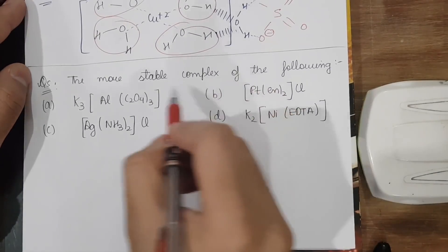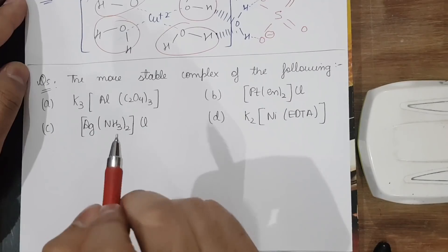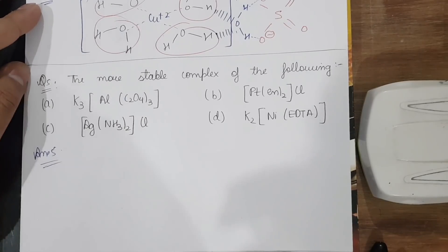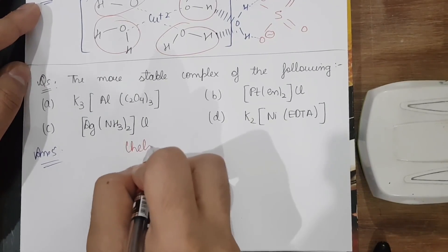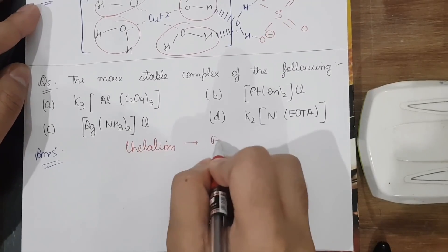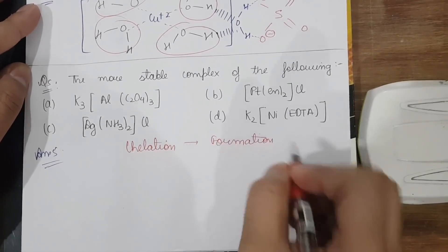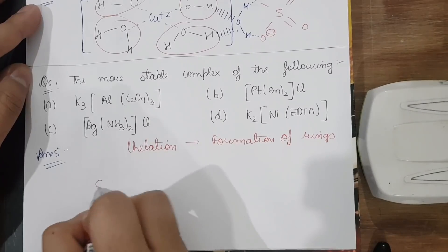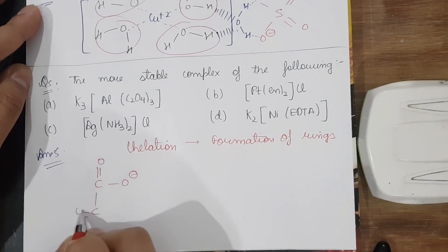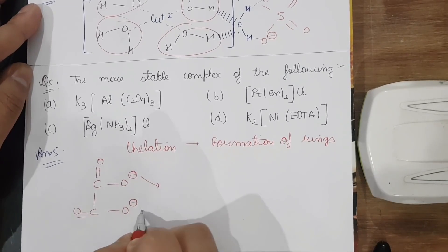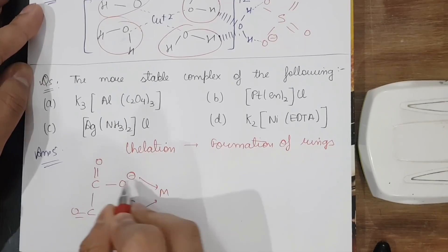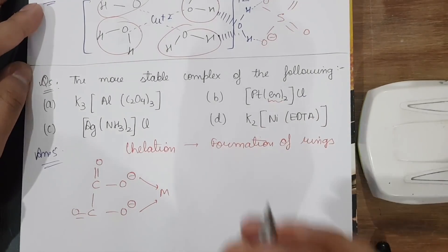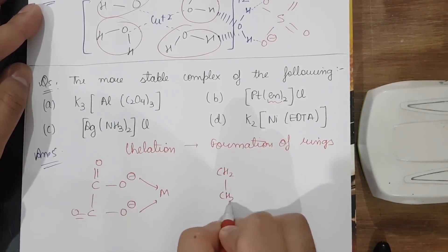The next question asks which complex is the most stable. A very important point: whenever chelation happens — meaning rings are formed by electron-donating groups — stability increases. For example, C₂O₄²⁻ (oxalate) can form a five-membered ring, and en (ethylenediamine) can also form a five-membered ring by donating the lone pair of nitrogen.